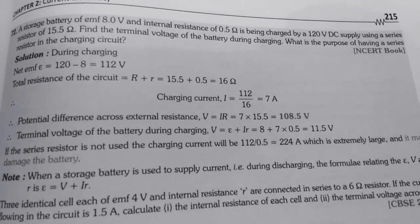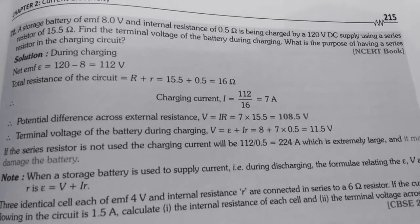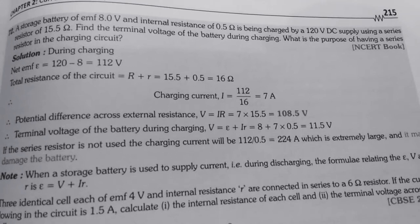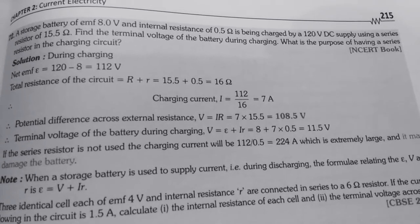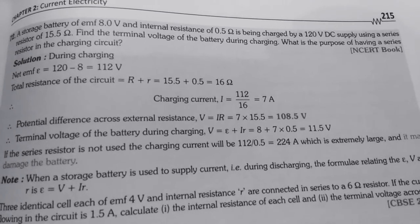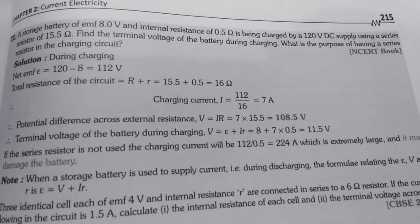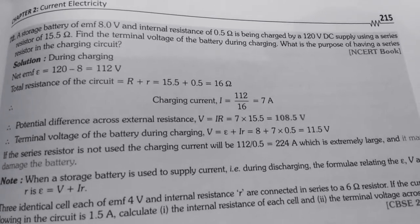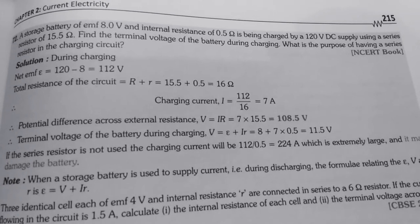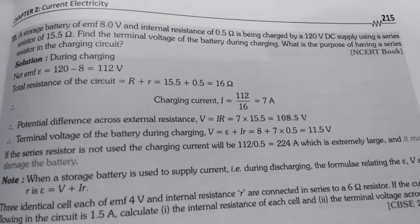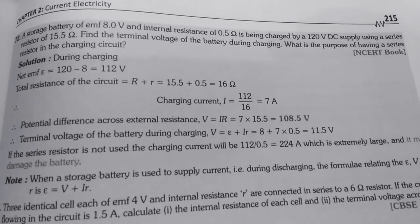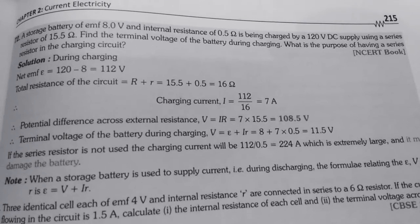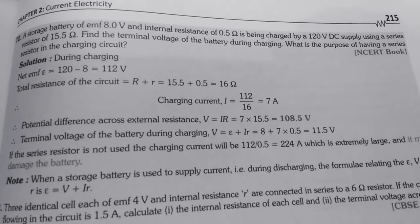So, see the next one. A storage battery of EMF 8V and internal resistance of 0.5 Ohm is being charged by a 120V DC supply using a series resistor of 15.5 Ohm. Find the terminal voltage of the battery during charging. And what is the purpose of having a series resistor in the charging circuit? So we have to tell the reason also that why series circuit is there.